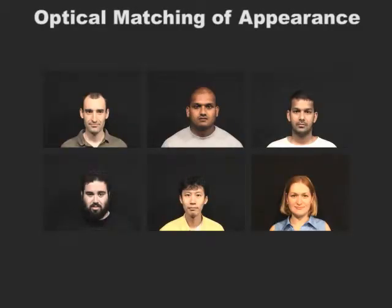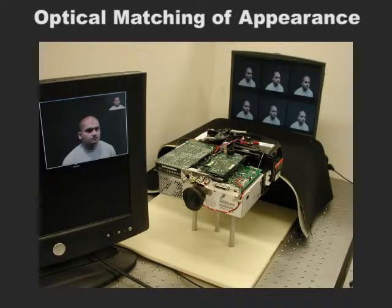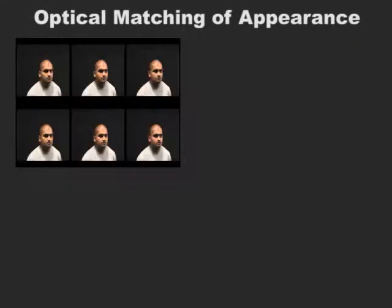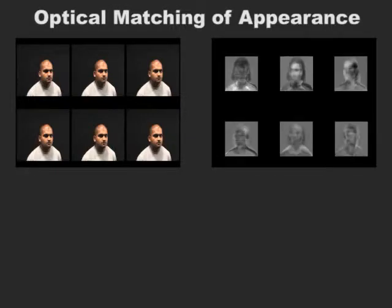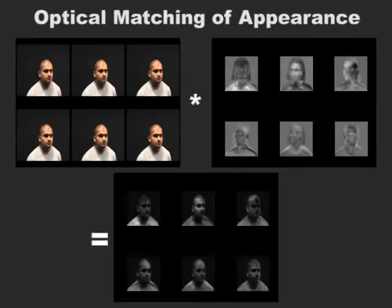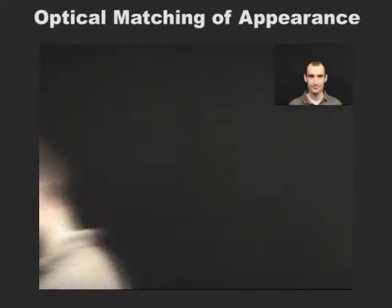Appearance matching using PCA is a popular method in computer vision. The programmable imaging system allows us to do the subspace projection needed for PCA in the optical domain in parallel. A tiling of multiple copies of the input image is displayed in front of the system, and a tiling of the top eigenvectors of the subspace is applied to the DMD. Thus, the input vector is optically multiplied with the eigenvectors. Here, we see the system performing face recognition in real time.